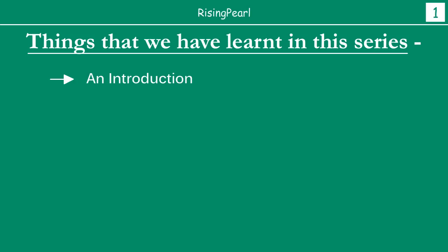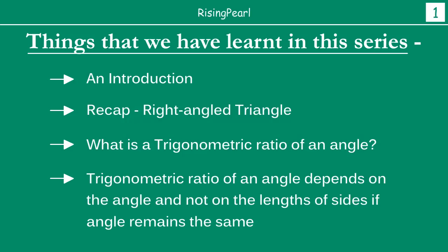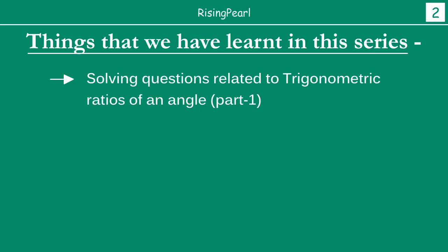We started off by looking at the introduction of what is trigonometry. We learned about right angled triangles and what is a trigonometric ratio. We learned that a trigonometric ratio is always in the context of an angle, and we talk about that for right triangles. Then we learned that the trigonometric ratio of an angle depends on the angle and not on the length of the sides, if the angle remains the same. We then moved on to learning how to solve questions related to trigonometric ratios of angles.